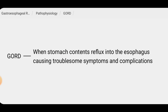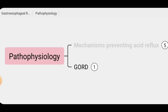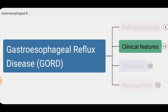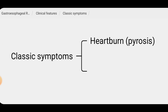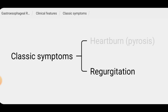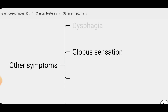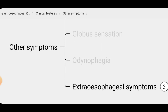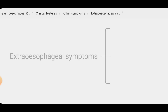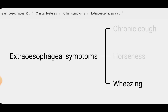Regarding the clinical features of GORD, the classic symptoms are heartburn, or pyrosis, and regurgitation. There are other symptoms as well, including dysphagia, globus sensation, odynophagia, and extraesophageal symptoms such as chronic cough, hoarseness, and wheezing. These respiratory symptoms occur due to chronic acid reflux into the larynx and airway.